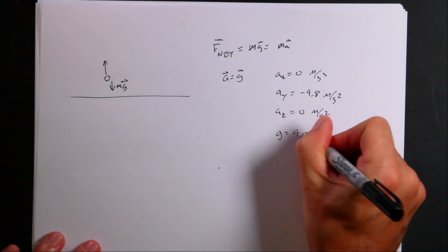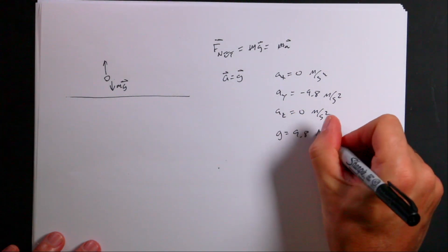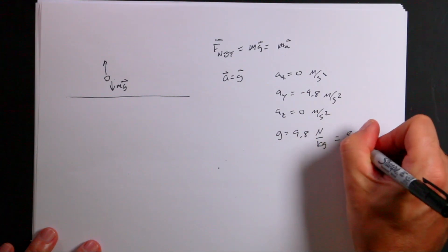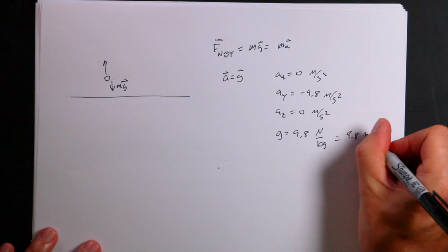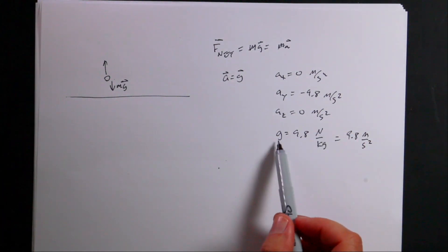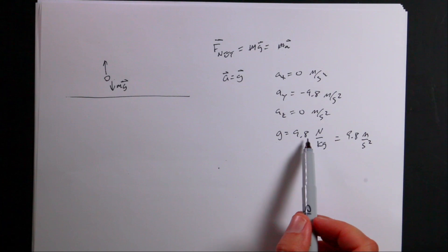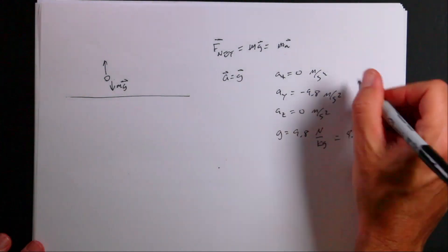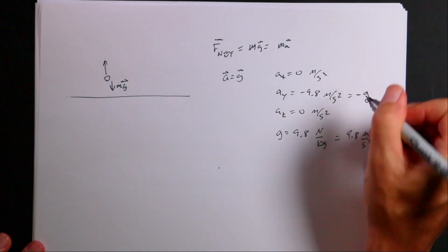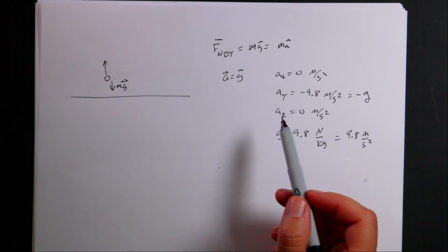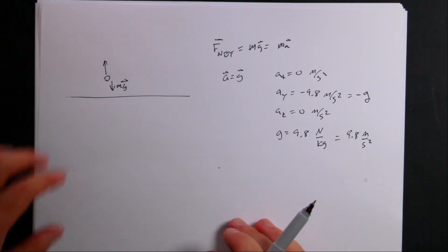G is technically 9.8 newtons per kilogram, which has the same units as 9.8 meters per second squared. So when we write AY, it equals negative G — it's negative because that's the magnitude of G, and G is the gravitational field.